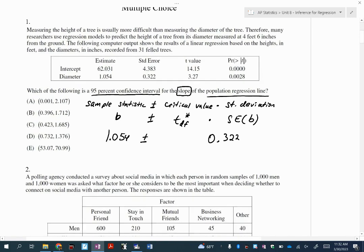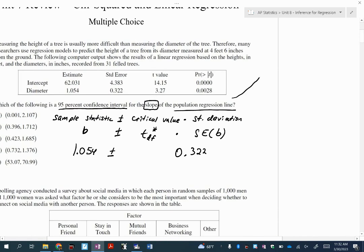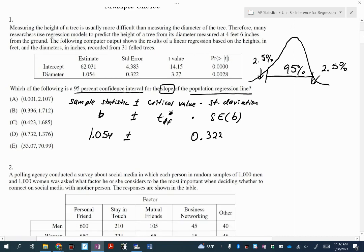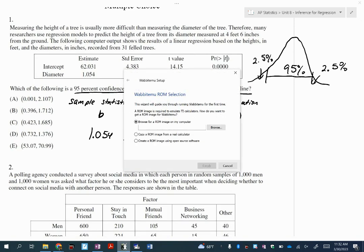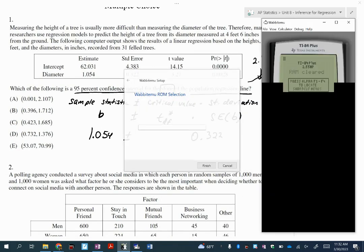You remember from our conversations earlier this week, right? If I go to the word that's not intercept or constant, which in this case is the diameter of the tree, this right here is the slope. So the slope is 1.054 plus or minus. I'm going to need to do a little work to find T star, so I'll hold off on that. But do you see the number that's next to 1.054? This is the standard error, so just write that down: 0.322.